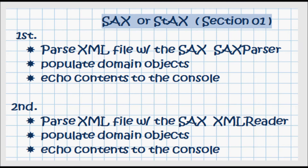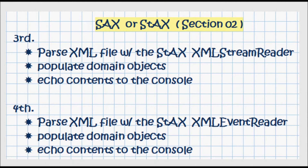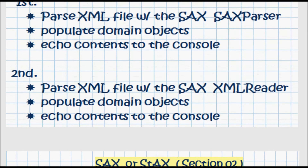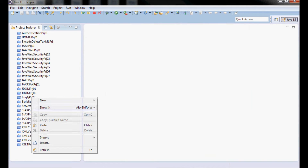This tutorial is going to be in two sections. In the first section I'm going to do SAX parsing, and in the second section I'm also going to be doing SAX parsing but in two ways: with a SAX parser and with an XML reader. In both cases I'm going to be populating domain objects and echoing the contents to the console. I'll start by creating a new project.